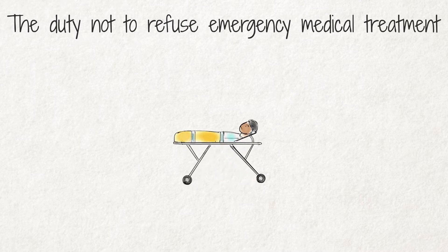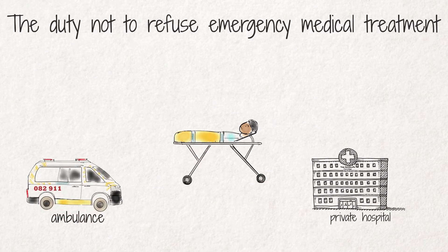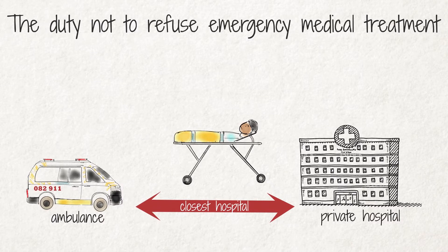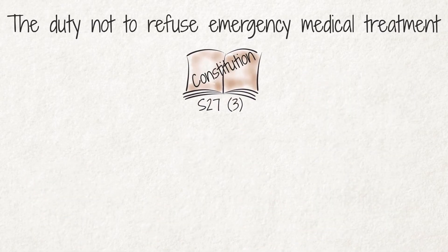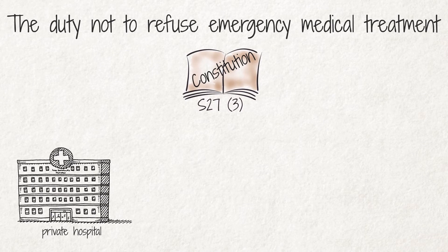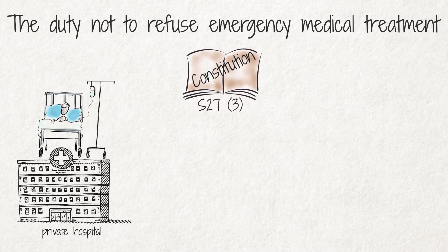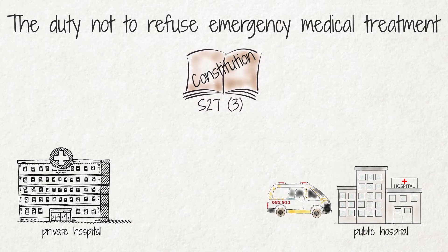People who need emergency, life-saving medical attention have a right to receive this at the closest hospital. Private hospitals usually only cater for patients whose treatments are covered by medical aid or who can pay the fees. Section 27.3 of the Constitution prohibits private hospitals from turning away patients whose lives are in danger, regardless of their ability to pay, until they have been stabilised and can be transferred to a public facility.